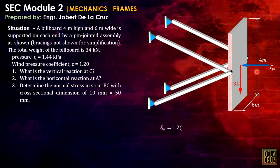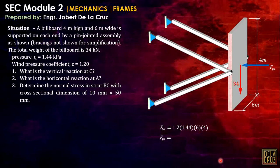The total weight of the billboard is 34 kilonewtons, and the force of the wind is 41.47 kilonewtons. Going back to the plane view, since this force and this weight act at the center of the billboard, when analyzing one of the supports, we divide by 2. Each support shares half of the wind force and half of the weight.